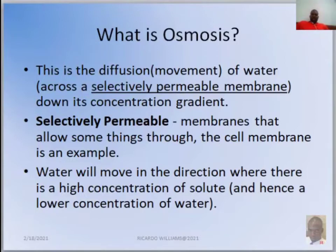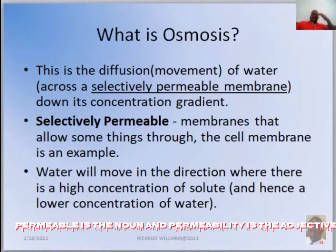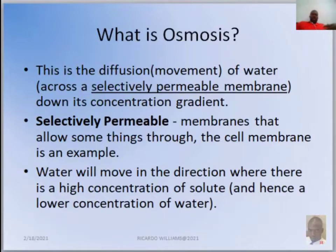Osmosis is the diffusion, or the movement, of water across a selectively permeable membrane down its concentration gradient — that is how we define osmosis. We need to take that apart and look at the word selectively permeable. Permeability is the ability of a barrier to allow materials to move through it.